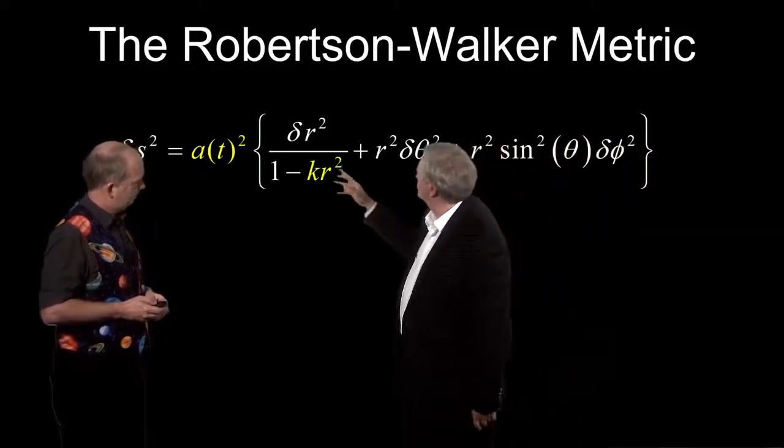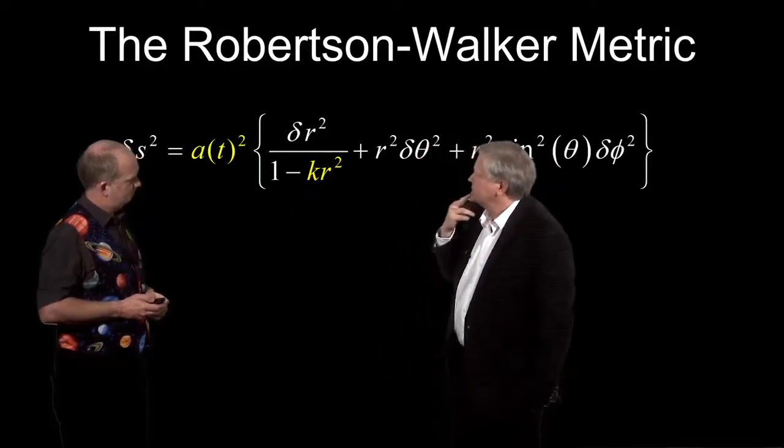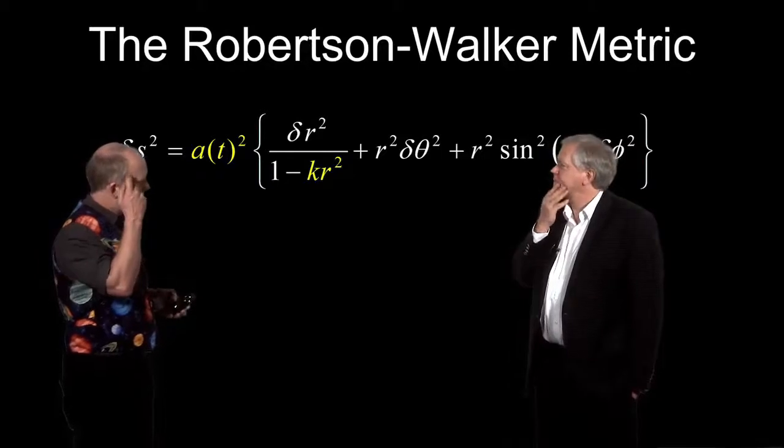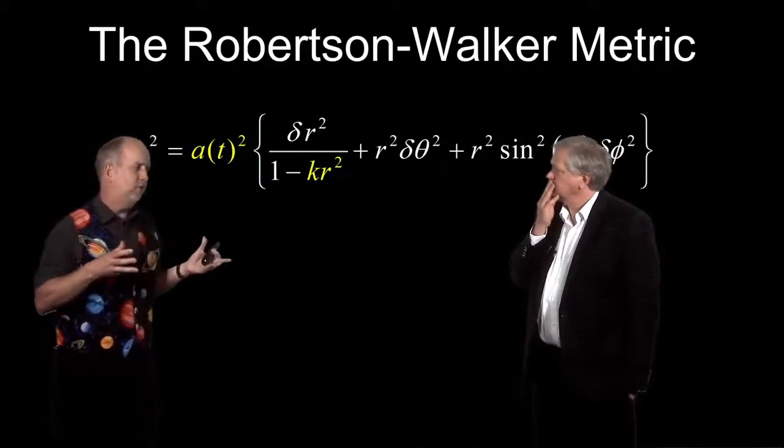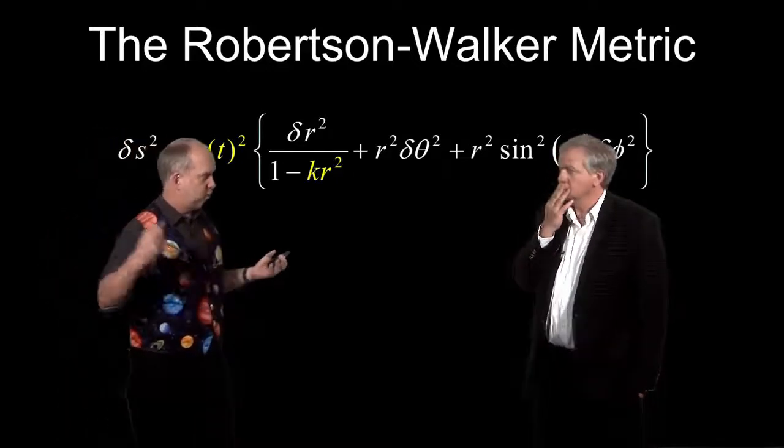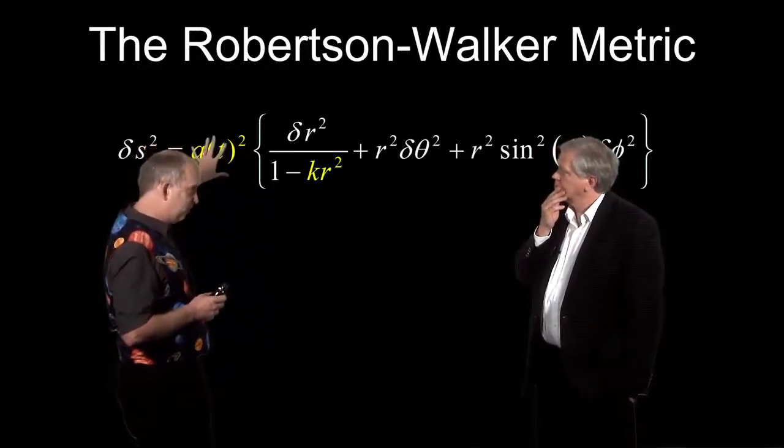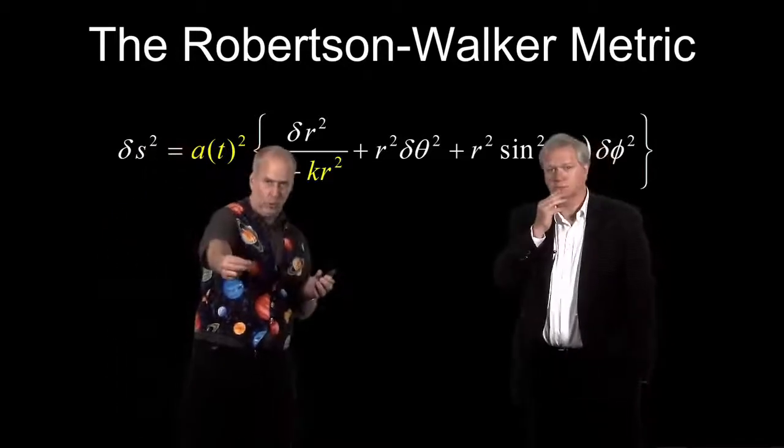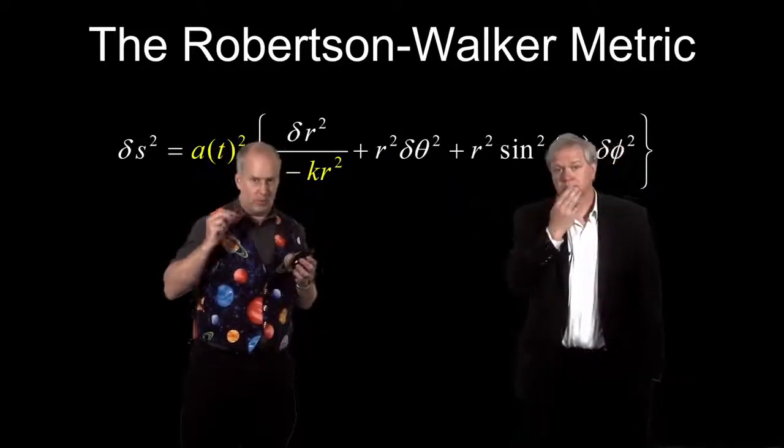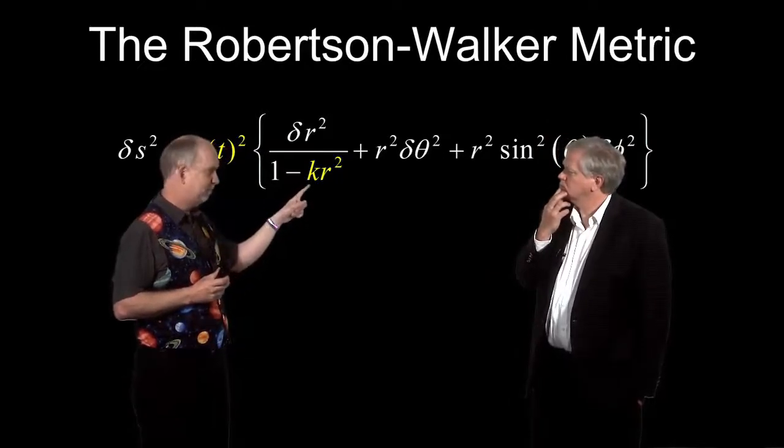And so then we have this other bit, which is this dr squared over 1 minus kr squared. So that is a funny term. So let's think how that might work. I mean, this worries me right away because it seems to suggest that maybe pi could be different. Because think of what pi is. You've got a circle, and you've got a circumference, and you divide it by the diameter, and you get pi. What we're seeing here is for a given value of a and t, if you move in angle, theta, or phi, the distance is exactly what you expect. Nothing's changed. But if you move in radius outwards, it could be either more or less than what we normally think, depending whether k is positive or negative.